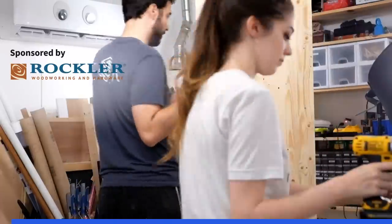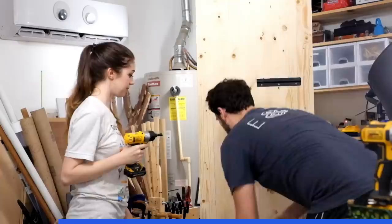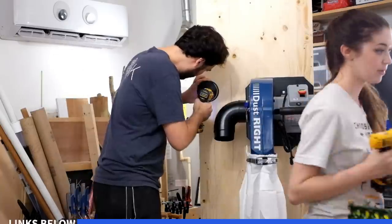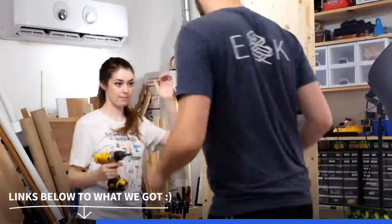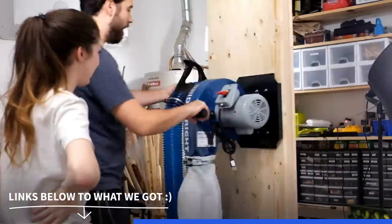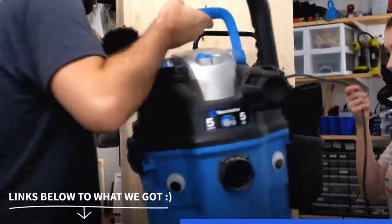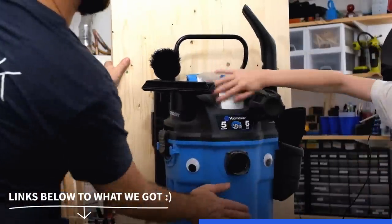While we install everything, we want to thank Rockler for making this video possible. Also, for anyone not familiar with dust collection, we'll give a brief rundown of our setup. The dust collector works great for large volumes of dust but it's lower pressure. It's great for big tools like a table saw or a router table. The shop vac doesn't move as much air but it's high pressure so it's awesome for hooking up to hand tools or cleaning the shop.